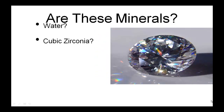How about cubic zirconia? Also known as fake diamonds, they are solid, crystalline, inorganic, with a specific chemical composition, which means it's a homogeneous solid — it's the same throughout.